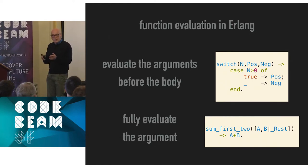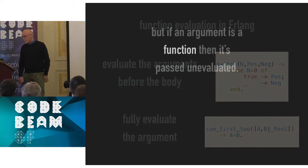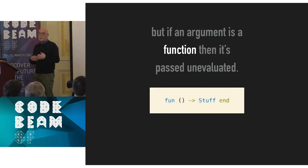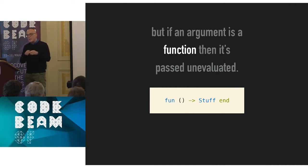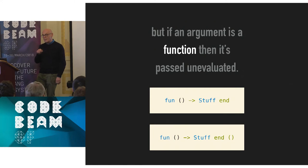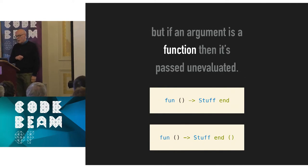Laziness is available in a number of languages. How can we do it in Erlang? The key is what happens when you pass a function as an argument — it's passed unevaluated. So if we want to wrap some stuff up and make it unevaluated, we stick it inside a function body: a function that takes no arguments and returns stuff. Instead of the stuff being evaluated, we wrap it in a closure. If we want to unwrap it, we apply the function. The message is: wrap stuff up in a closure, then pull it out by applying it.